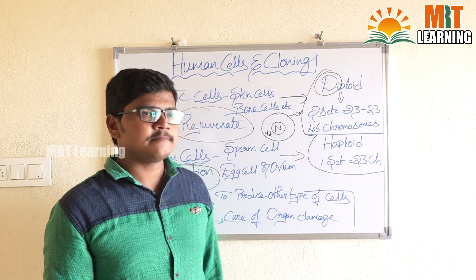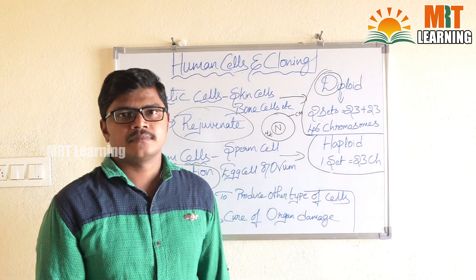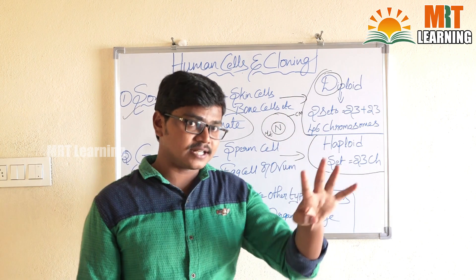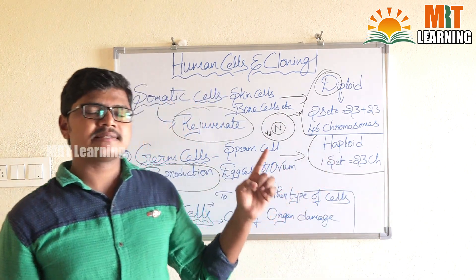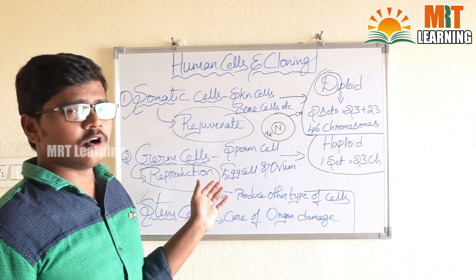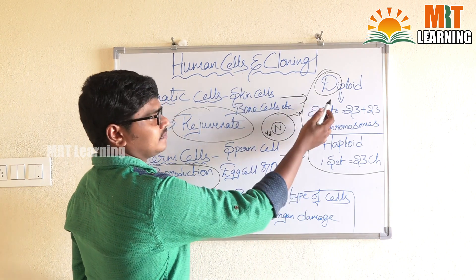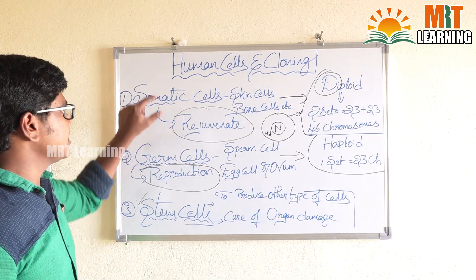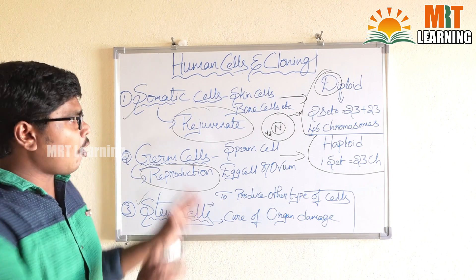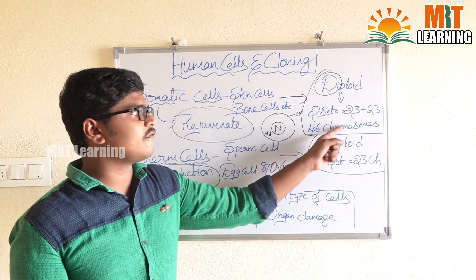Haploid means one set of chromosomes — it consists of only one set, so only 23 chromosomes. So diploid means two sets, 46 chromosomes, and haploid means one set, 23 chromosomes. All somatic cells come under diploid cells because somatic cells consist of 46 chromosomes in their nucleus.